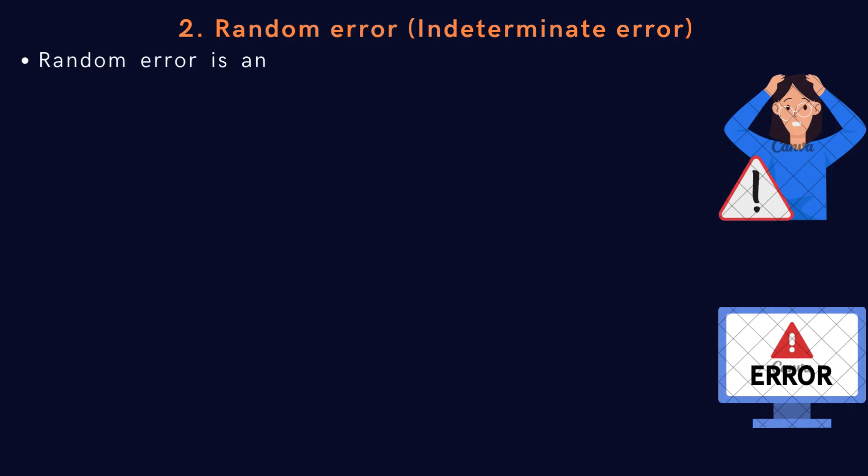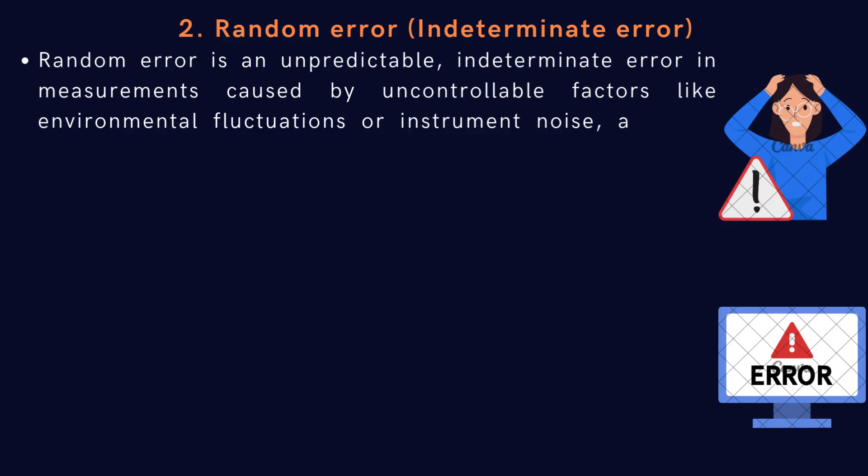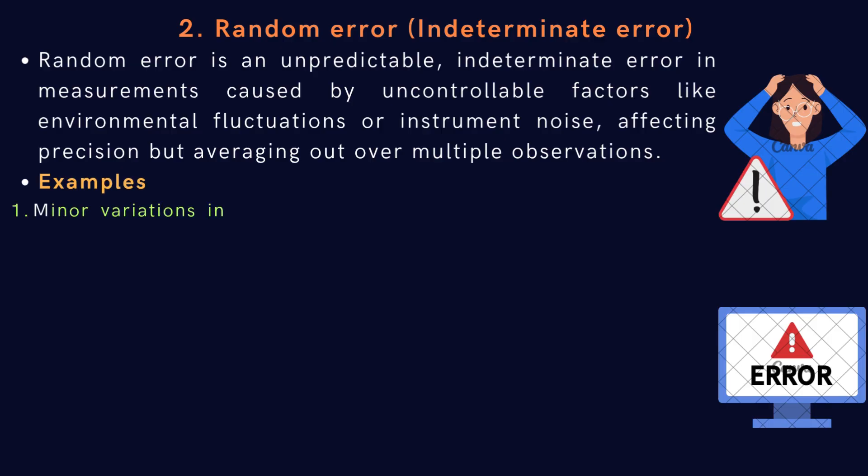Let us see the second type of error, called random error or indeterminate error. Random error is an unpredictable, indeterminate error in measurements caused by uncontrollable factors like environmental fluctuations or instrument noise, affecting precision but averaging out over multiple observations.